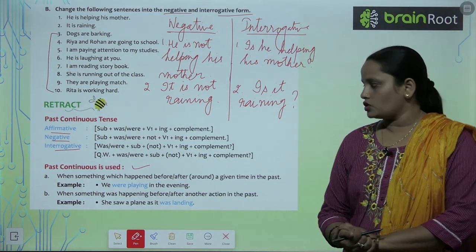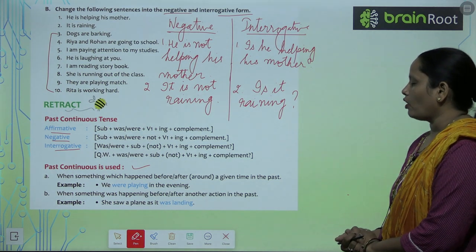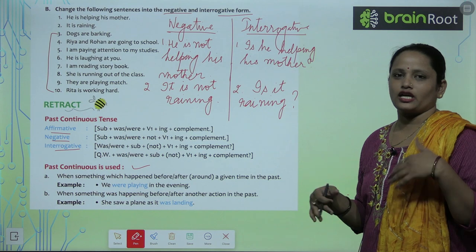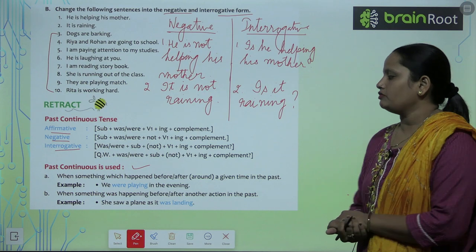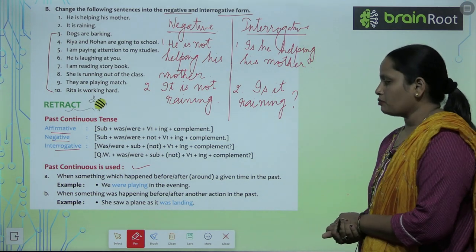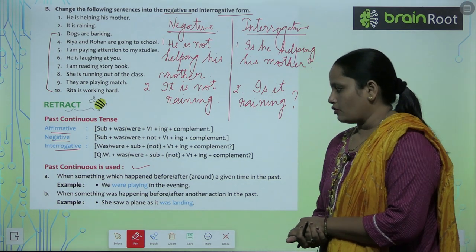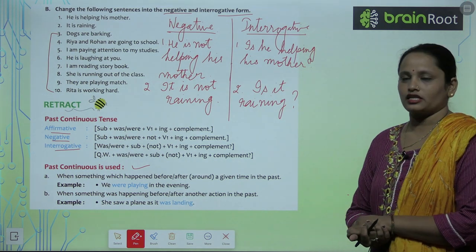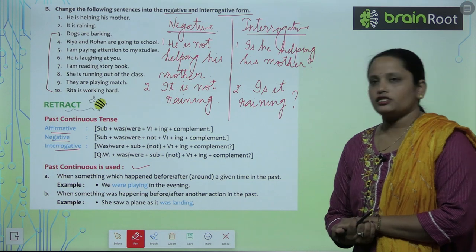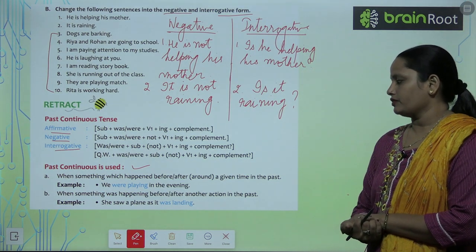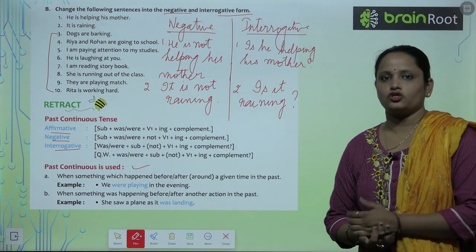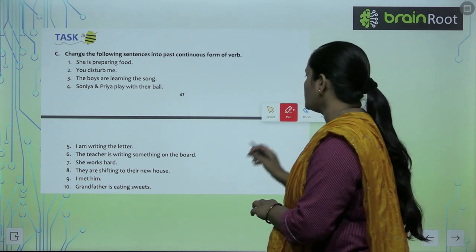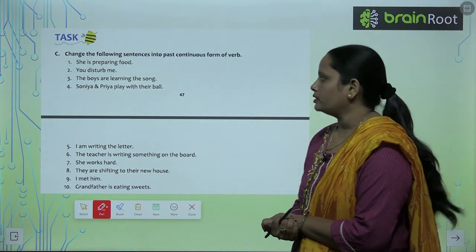Past Continuous Tense is used when something happens before or after a given time in the past — for example, 'We were playing in the evening.' It is also used when something was happening before or after another action in the past — for example, 'She saw a plane as it was landing.' Now let's quickly do Exercise C: Change the following sentences into past continuous form.